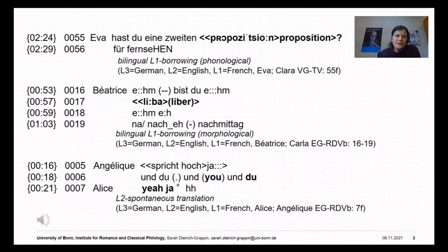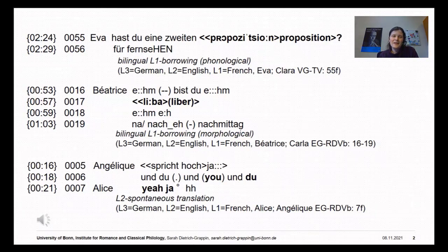So what we can observe here are various kinds of production transfer. We have two borrowings. The first one is based on the L1 French 'proposition' that is phonologically adapted to the target language German by saying 'proposition'. The second borrowing is again based on the L1 French 'libre' in the sense of free, or 'do you have time, spare time', and this is morphologically adapted to German in the ending.